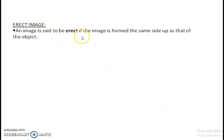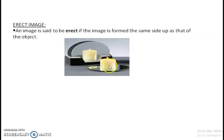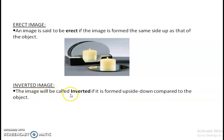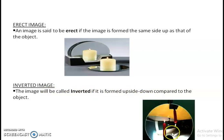Now let's learn a few new terms. An erect image is one where the image is formed on the same side up as the object — you can see here the object and the image are both erect. The opposite of an erect image is an inverted image. The image is called inverted only if it is upside down compared to the object. So here the object is erect but the image formed is inverted. These are the terms erect and inverted.